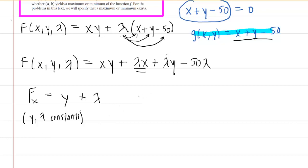Now, moving on, we also need to find the partial derivative of F with respect to y. And in this case, x and lambda are going to be constant. So for the derivative with respect to y of xy, we would have x. The derivative with respect to y of this term here would be 0 because both lambda and x are constant. Then the derivative of lambda y would just be lambda. And then the derivative of minus 50 lambda is just 0. So we can take out those 0s and we're left with just x plus lambda.